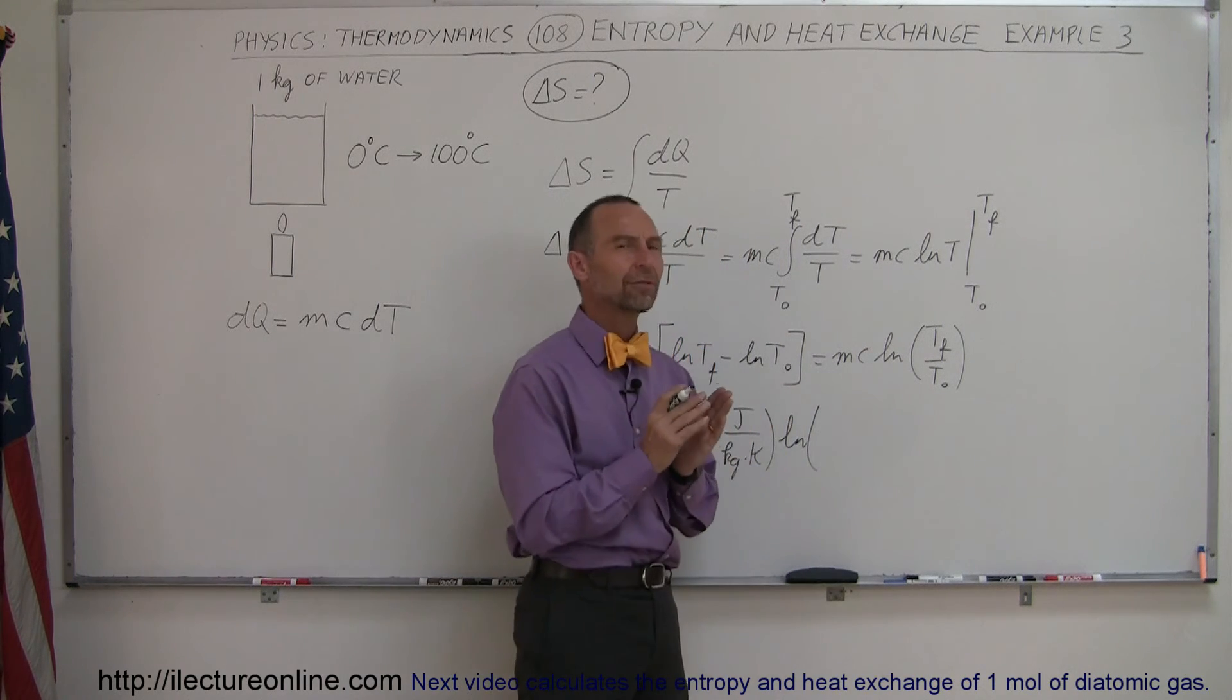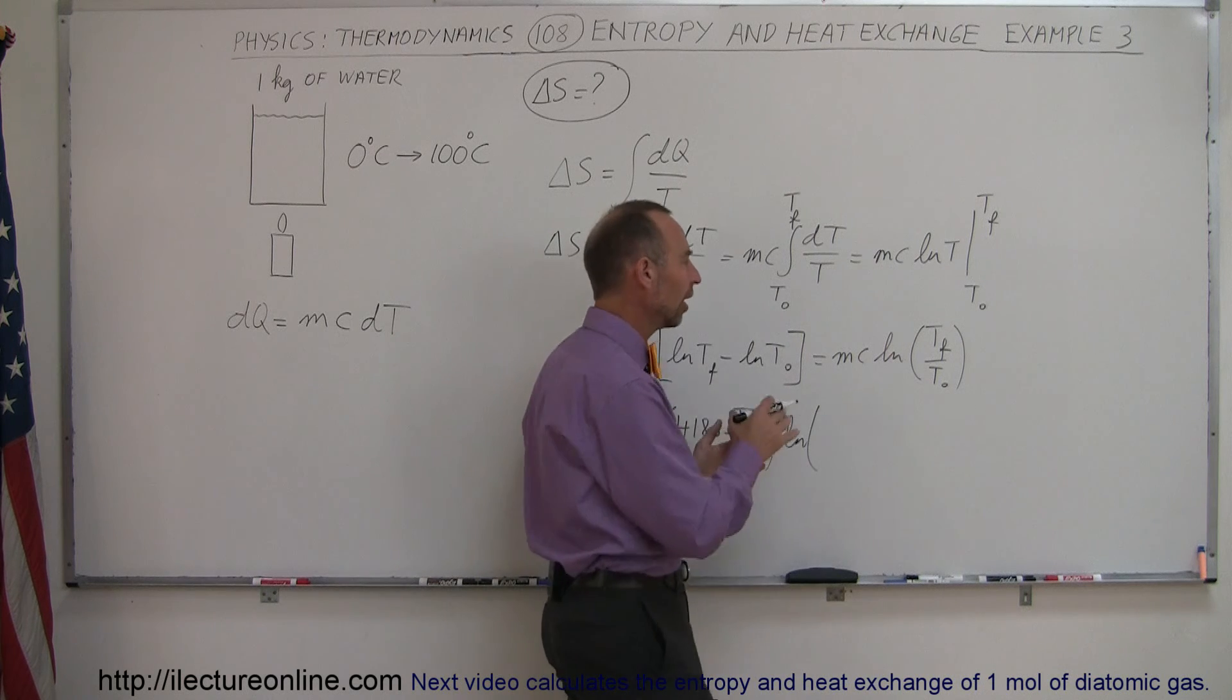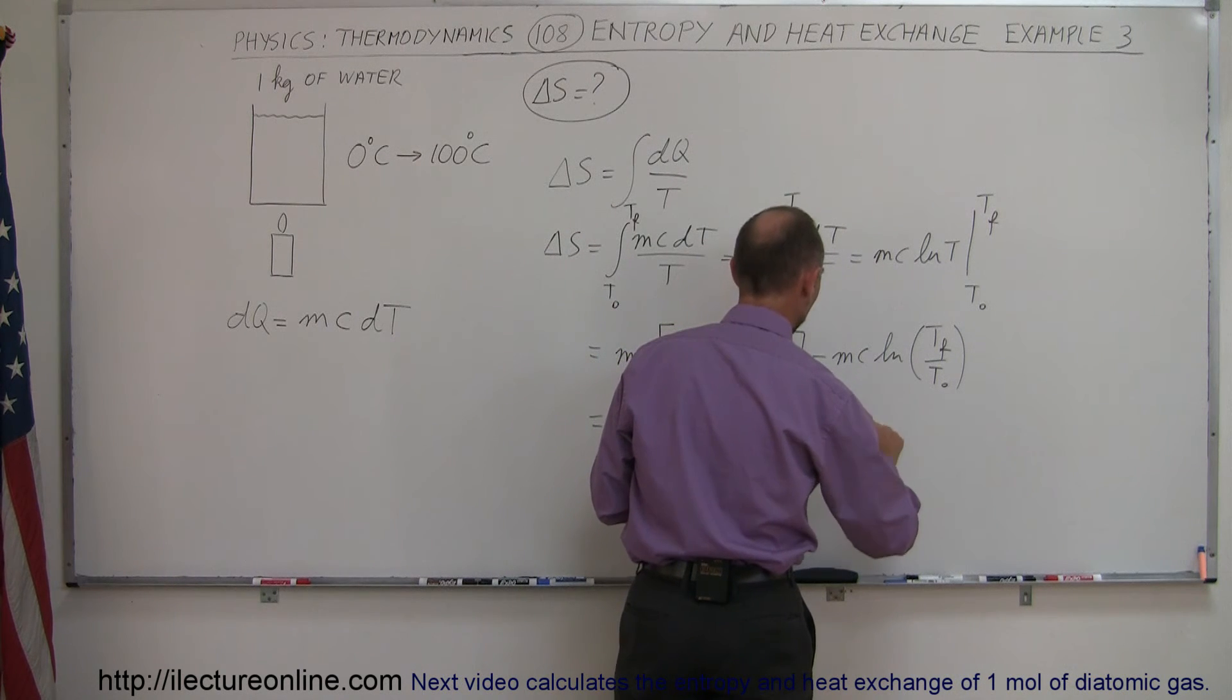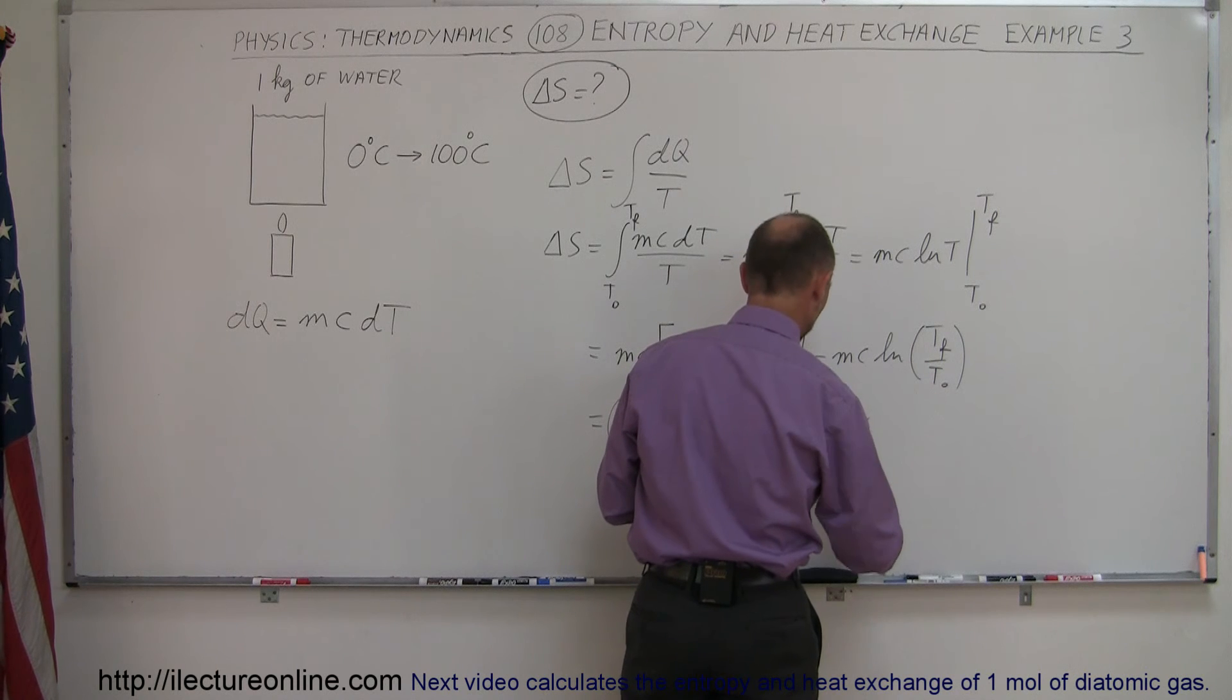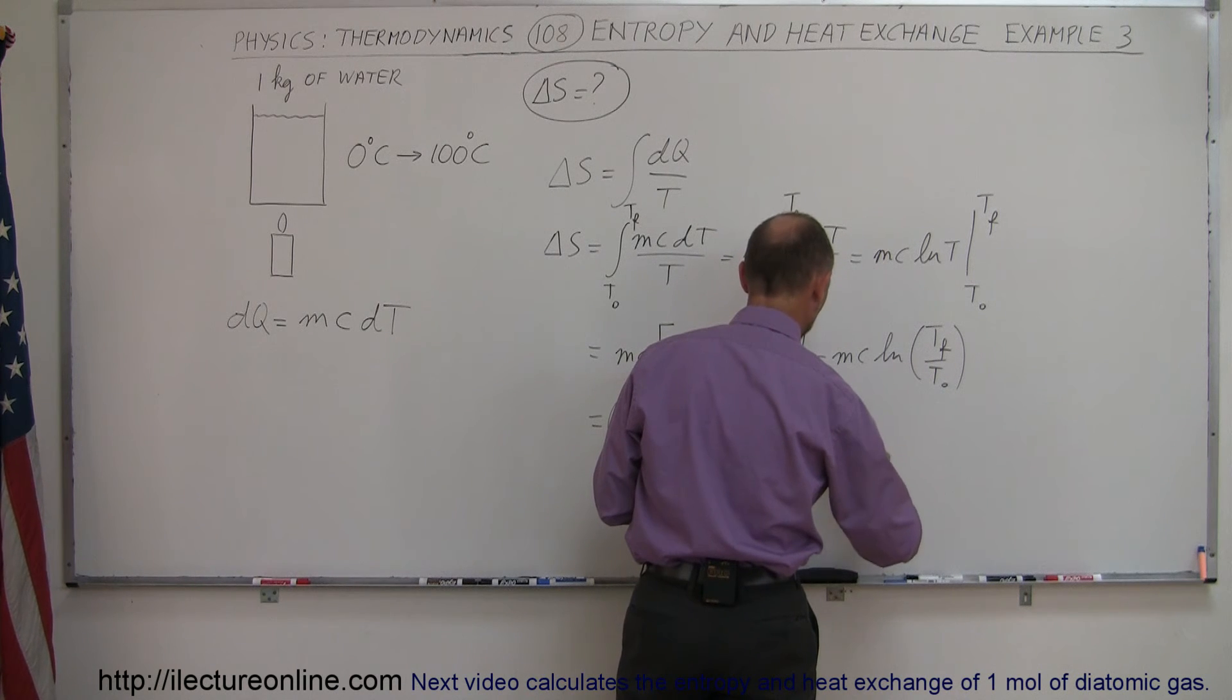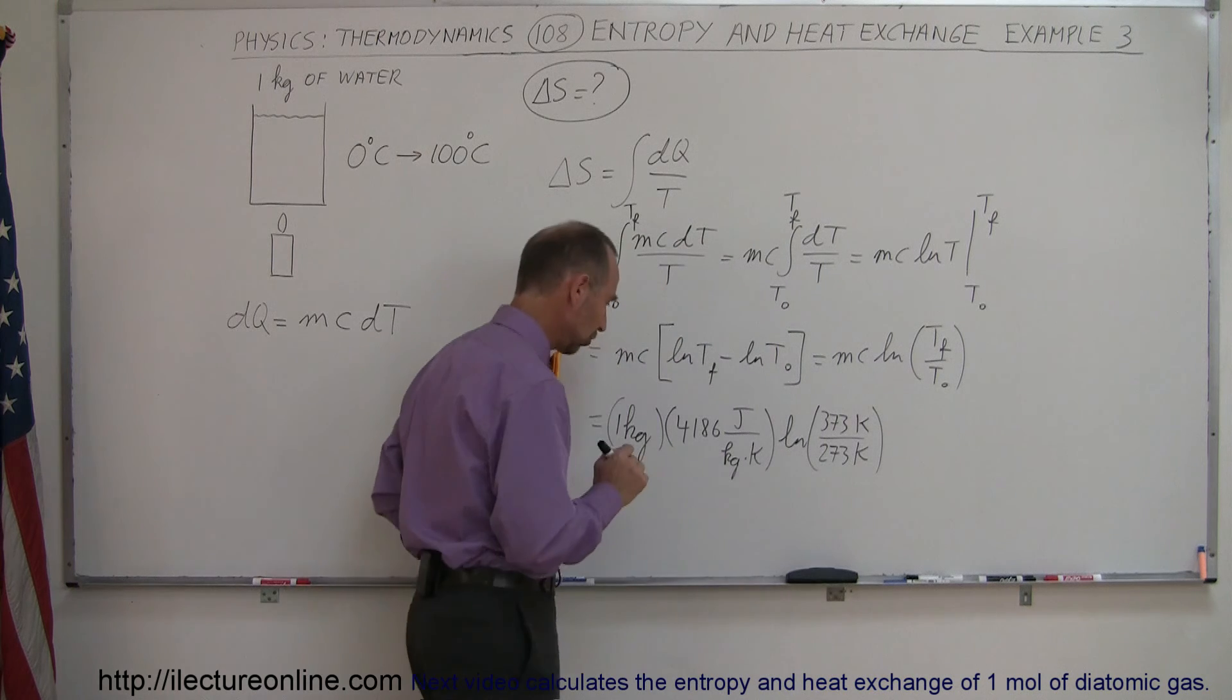And of course there we have to convert that to Kelvin degrees. A hundred degrees centigrade is 373 Kelvin and the initial temperature zero degrees centigrade is 273 Kelvin, so that would be the ratio of the temperatures.